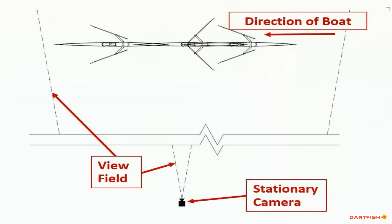Like previous sections, stroke ratio and stroke rate measurements will be taken from video analysis. This graphic shows the field of view required to capture one complete stroke from catch to catch two. Rigging analysis requires that video is taken with the crew rowing past the camera at race rate and race intensity. An ideal place to capture video is during a race at a point in the middle thousand meters of the course.